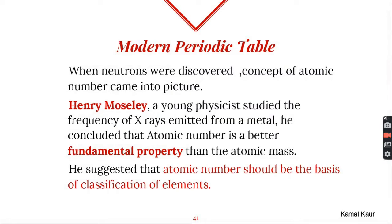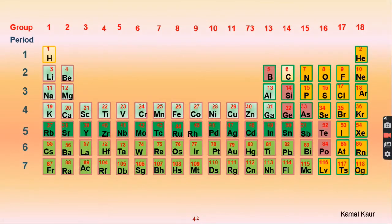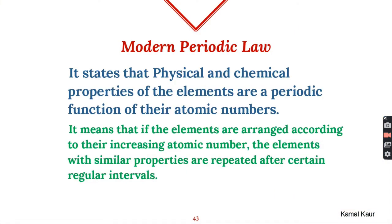Moseley also suggested that atomic number should be the basis of classification of elements. Henry Moseley, along with scientists like Bohr and Bury, gave the modern periodic table, in which elements are arranged in order of their increasing atomic numbers, and Mendeleev's periodic law changed into the modern periodic law.